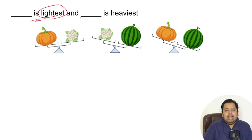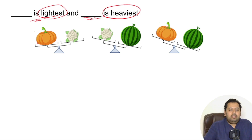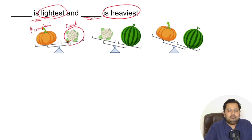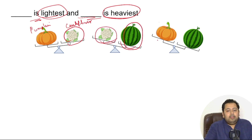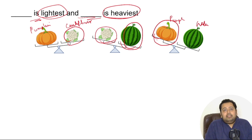Here you have to find out which is the lightest and which is the heaviest. In the first scale you can see a pumpkin weighing more than the cauliflower. In the second scale the watermelon weighs more than the cauliflower. And on the third weighing scale the watermelon weighs more than the pumpkin. After looking at this, find out which is the lightest and which is the heaviest, and write your answer in the comment section below.